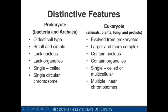Prokaryotes are the bacteria and archaea. In eukaryotes, they evolved from prokaryotes, are larger and more complex, contain a nucleus, contain organelles, can be single-celled or multicellular, and have multiple linear chromosomes. They include animals, plants, fungi, and protists.